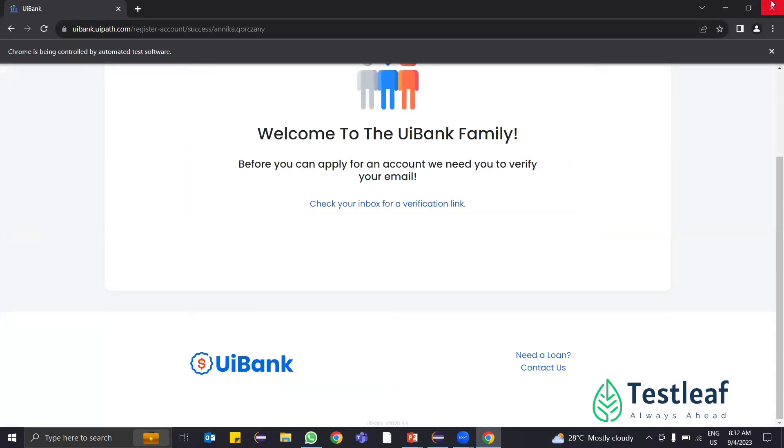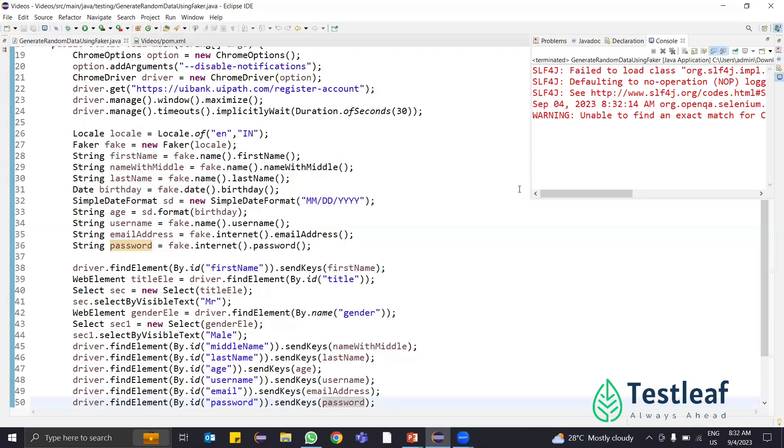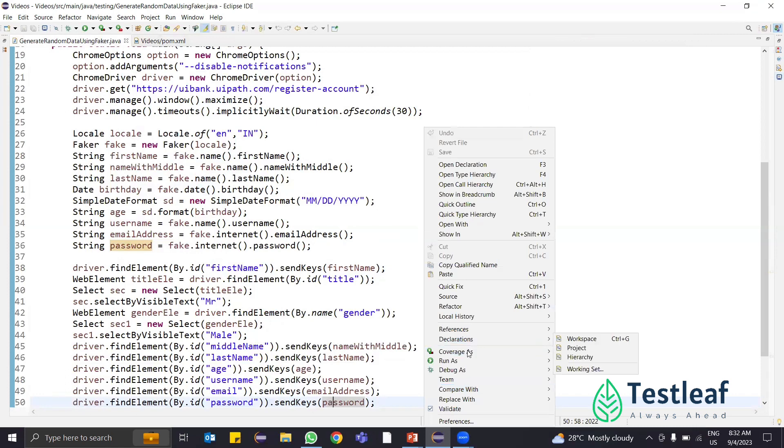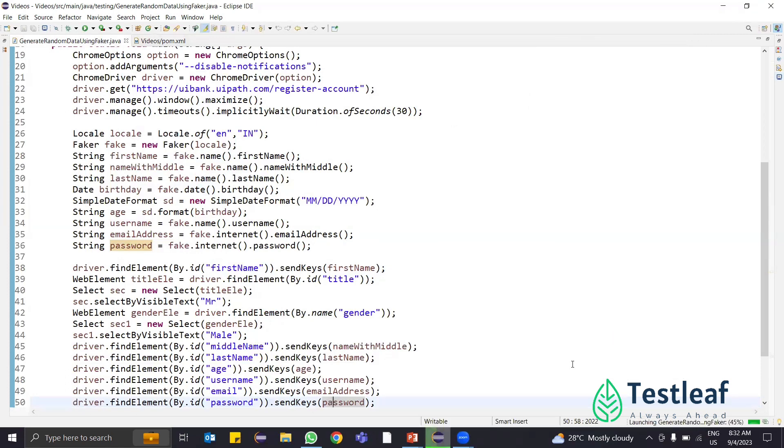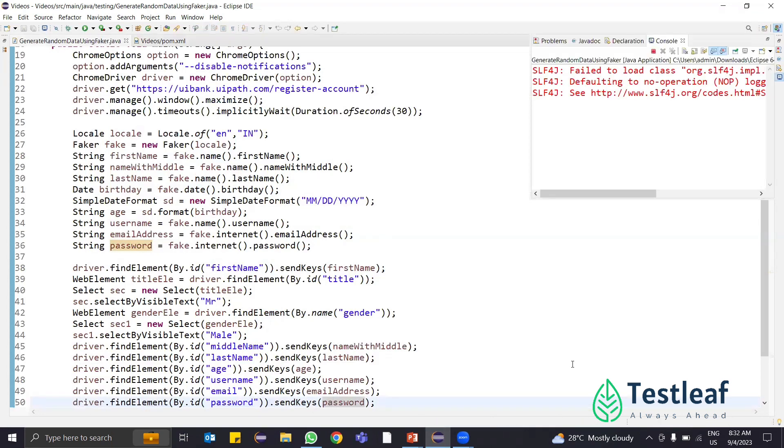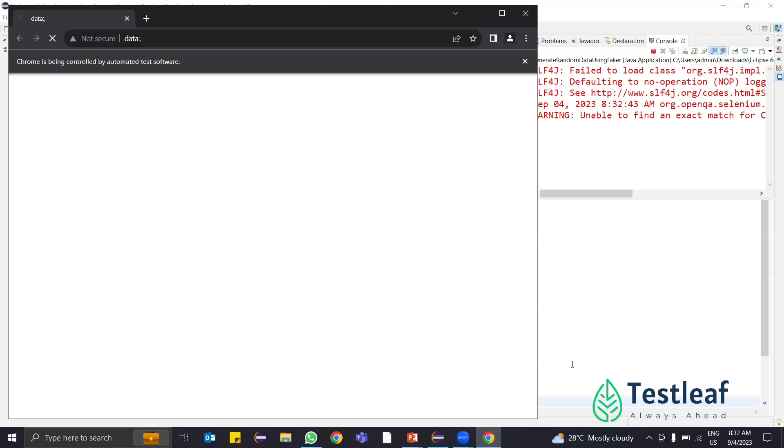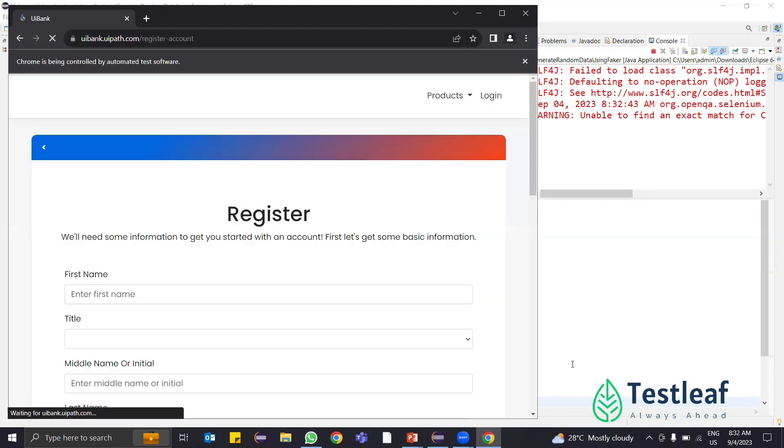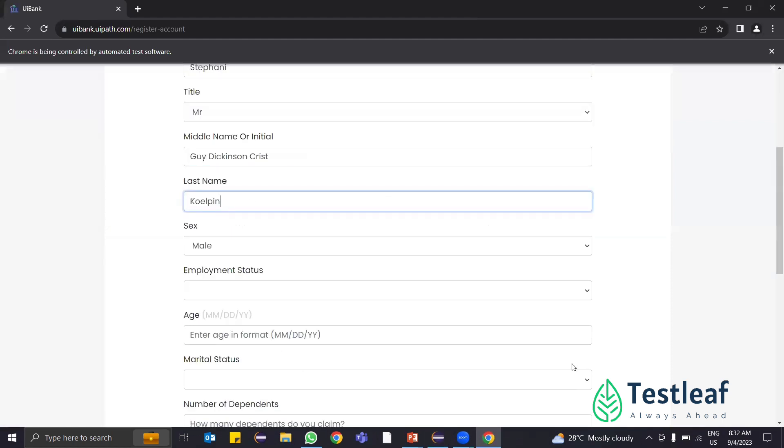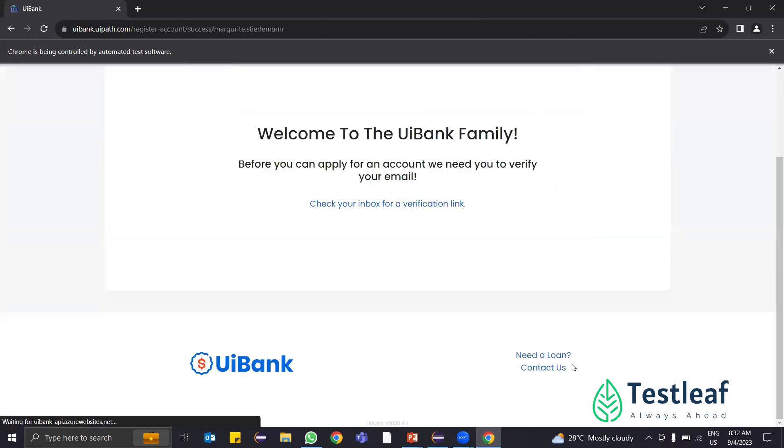Now the registration form is done by using Faker API. When I run for the next time, it is going to generate a different name. If you see, first it entered Hallis and now it will enter a different name. Each time when you run your test cases, it will generate random data. Now the first name is different. It is Stephen here. This is how you generate random data.